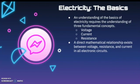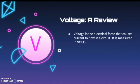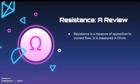Let's take a look at the basics of electricity. An understanding of the basics of electricity requires the understanding of three fundamental concepts: voltage, current, and resistance. A direct mathematical relationship exists between voltage, resistance, and current in all electronic circuits. Current is the flow of electrical charge through an electronic circuit; the direction of current is opposite to the direction of electron flow, and current is measured in amperes, or amps. Voltage is the electrical force that causes current to flow in a circuit, measured in volts. Resistance is a measure of opposition to current flow, measured in ohms.